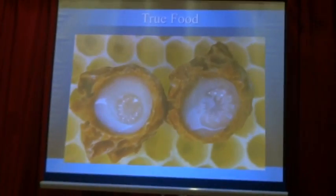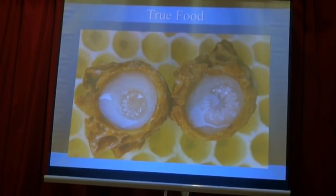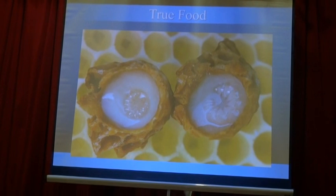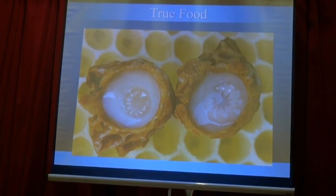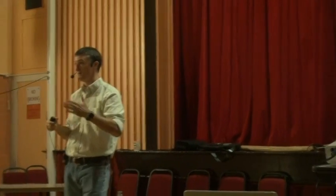Honeybees are also one of the only organisms on the planet to produce what we call a true food — a food produced by the individual on which one of its own members can fully develop. We call that brood food, or royal jelly. It's created by worker bees, and on it, one of the life stages of a worker bee — the immature — can fully develop. There's only one other organism that produces a true food: mammals. Milk is a true food. My wife nursed all four of our kids for the first year of their life; they grew completely on a true food, a food produced by their mother. And that's unique to honeybees and mammals.